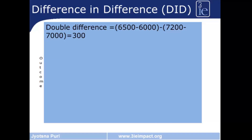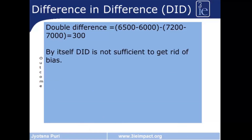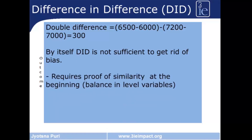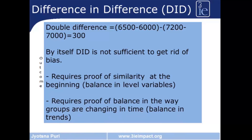But by itself, double difference is not sufficient to get rid of bias, because you do not know whether the groups you're comparing — the treatment group and the comparison group — were similar to each other before the program started. This need to show similarity before the program started means you need to show balance in level variables. Level means the status or the measure of the outcome variable at a static point in time. The second thing you also want to show is that these two groups would have moved in the same way had the program not taken place — this is the requirement for balance in trends. Both these things are very important when thinking about double difference.